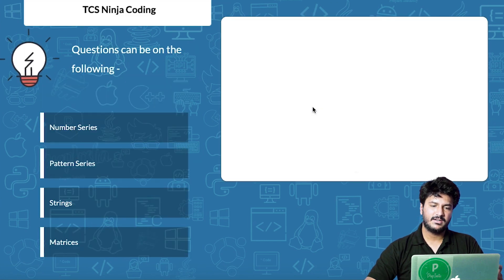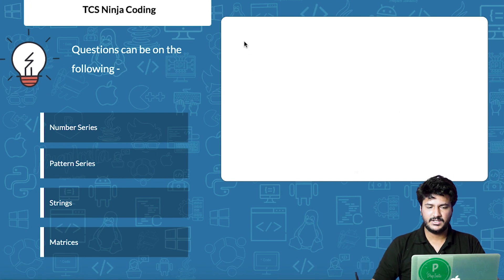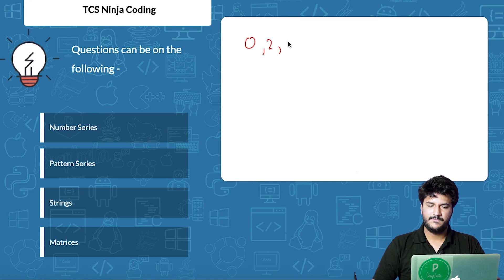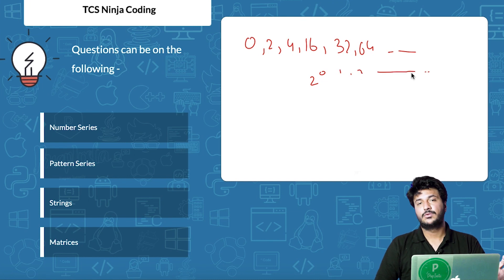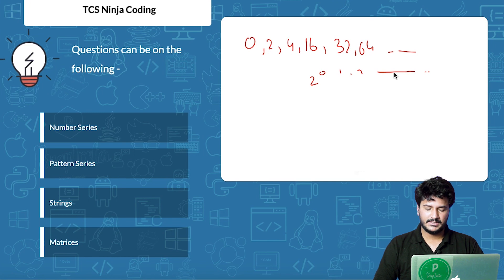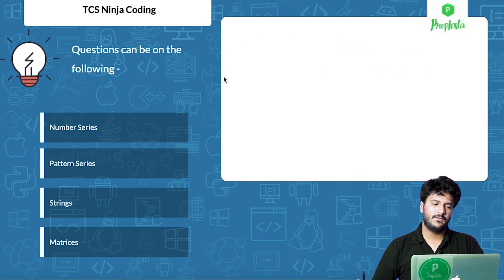If we talk about TCS Ninja, there are different types of questions asked in the exam. There are number series questions, for example: 0, 2, 4, 16, 32, 64 — that is 2 to the power of 0, 1, 2, 3, and so on. We are also going to solve one such number series question in this video.